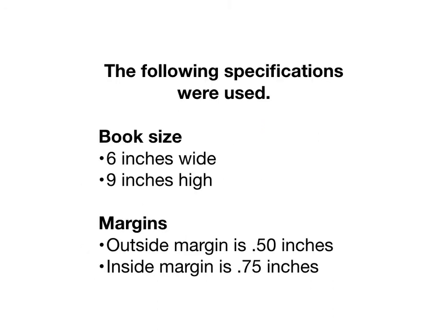Most books are formatted with each page being 6 inches wide and 9 inches high. The outside margin is generally set at ½ inch. The inside margin varies with the number of pages — a book with 200 pages should have an inside margin of ¾ of an inch. A really thick book would require a larger inside margin.